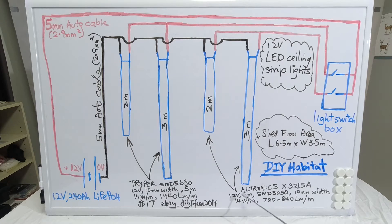Electronics in Melbourne, the product is X3215A alpha. It's a 12-volt 5 meter using SMD5050 LED chipset, also 10mm wide. Power consumption 14 watts per meter and the luminance is 720 to 840 lumens per meter.